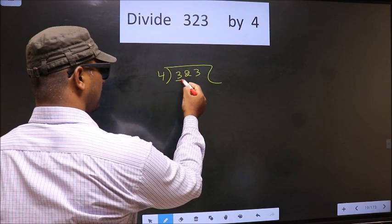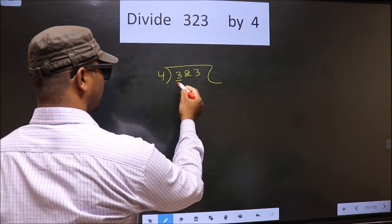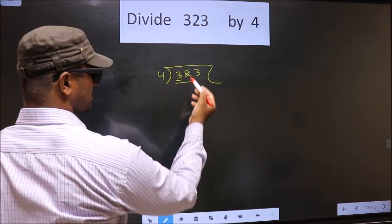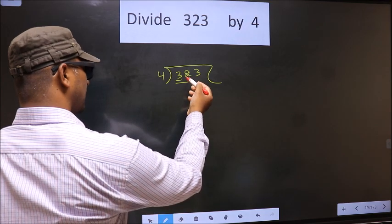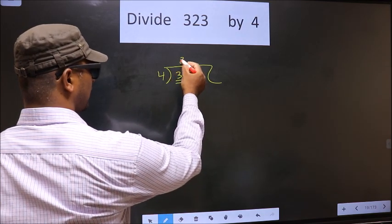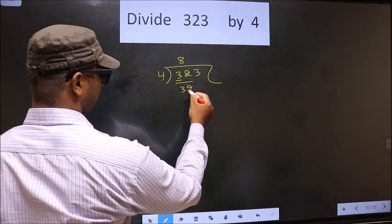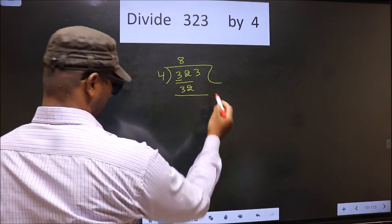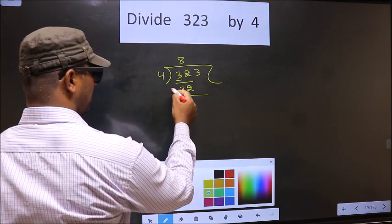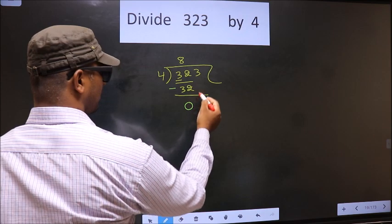Now here we have 3. 3 is smaller than 4, so we take 2 numbers, that is 32. When do we get 32 in the 4 table? 4 eights are 32. Now you subtract — 32 minus 32 is 0.